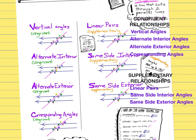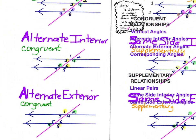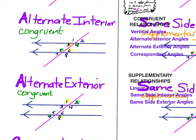When we look at alternate interior angles, that means on the inside of the space between my two parallel lines, the angles that are on alternate sides of the transversal are congruent to each other. So in this situation, three and six would be the exact same measurement, and four and five would be the exact same measurement.